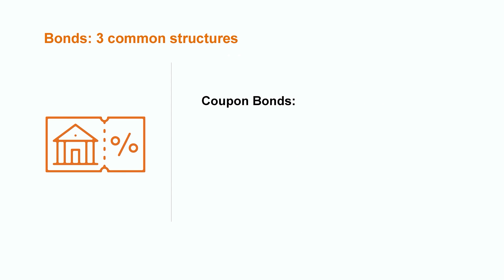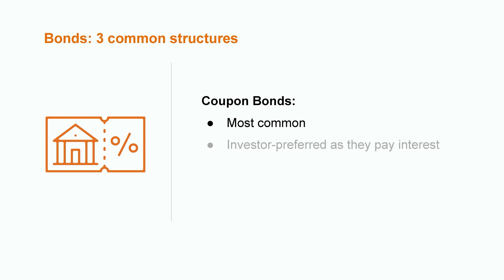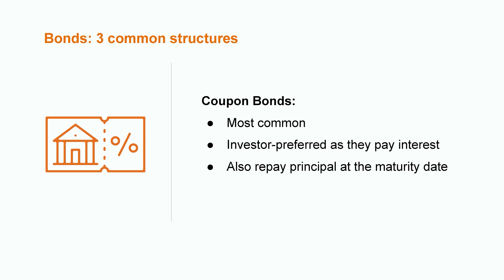While there are many types of bonds, let's briefly run through three common structures. Coupon bonds are the most common, and investors tend to prefer these because they pay interest over the life of the bond and also repay the principal amount at the maturity date. We'll run through an example of how to account for these later.